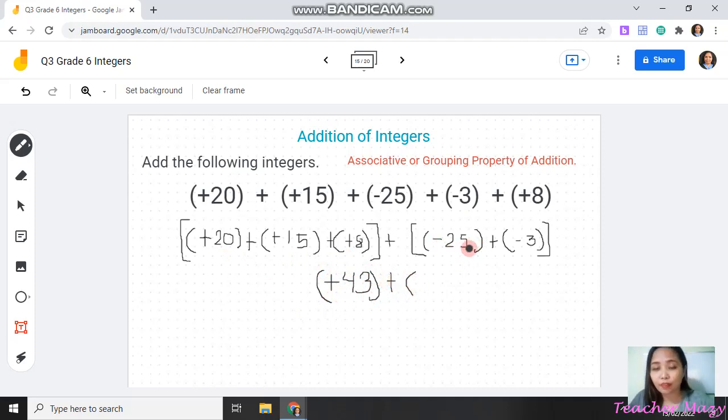Next is for the negative integers. That is negative 25 plus negative 3. Let's add. So, 25 plus 3 is equal to 28. And since their signs are negative, so the sum is also negative.